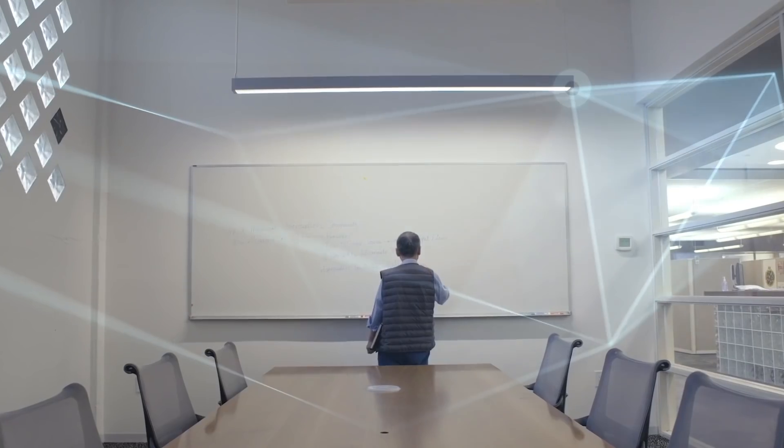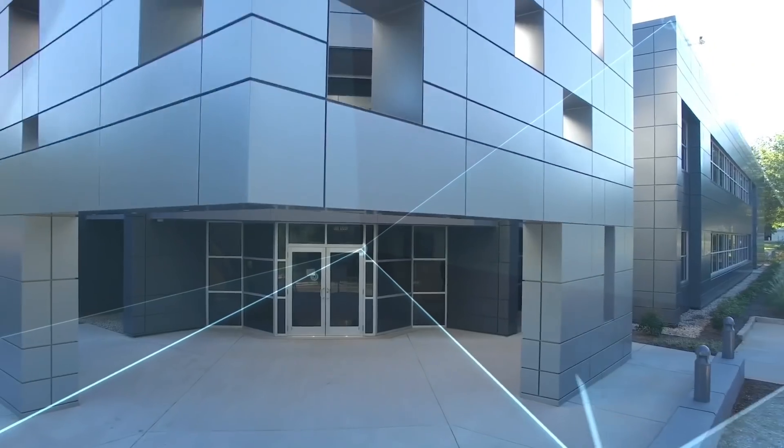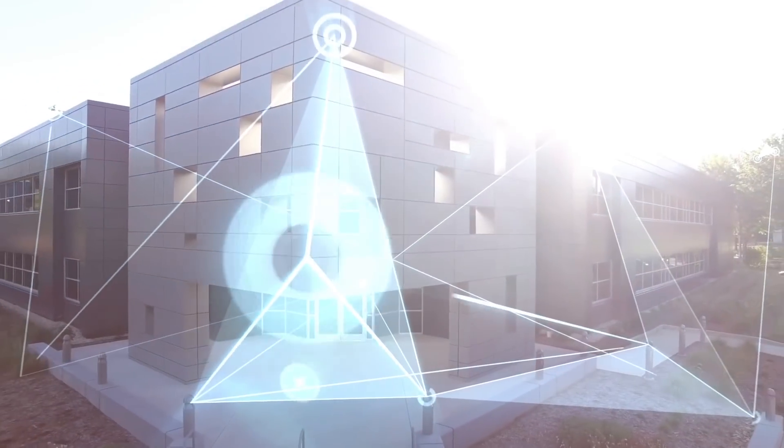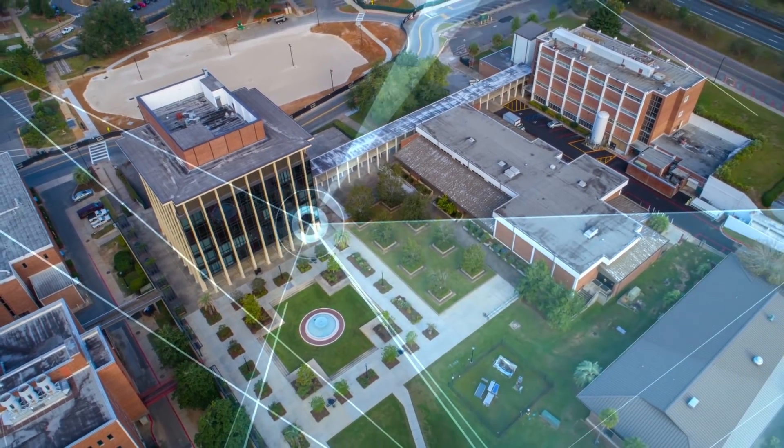Ideal for practically any application, small to large, indoor to outdoor, Enlite offers lighting controls that scale from one room to an entire floor, from one floor to an entire building, from one building to an entire campus.